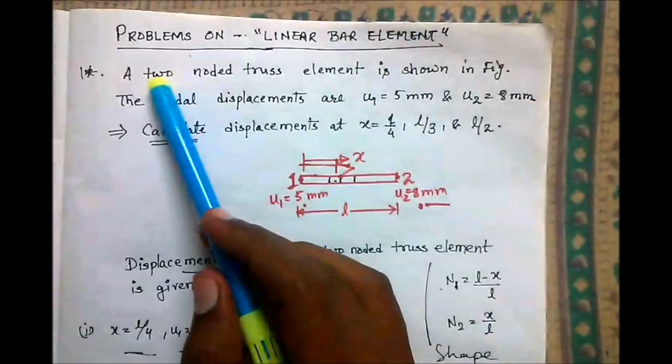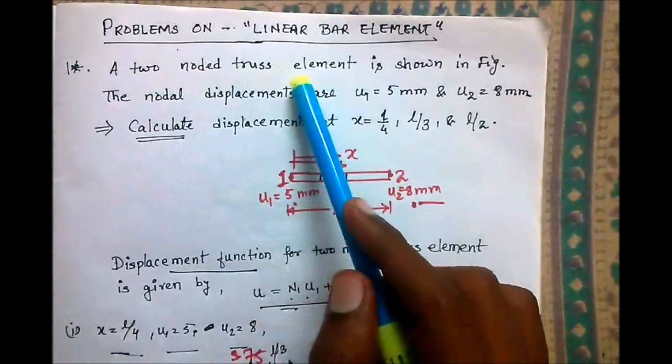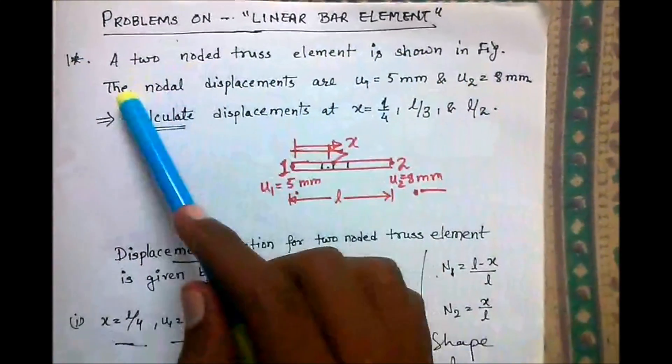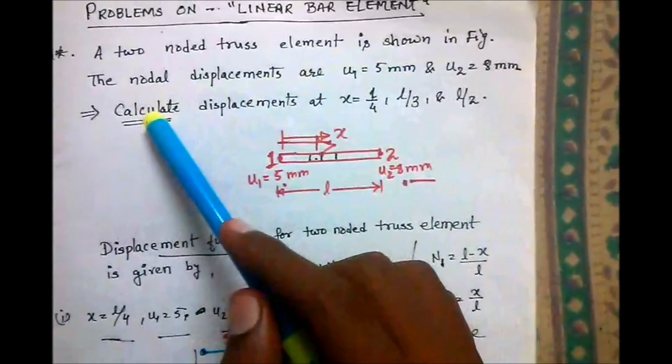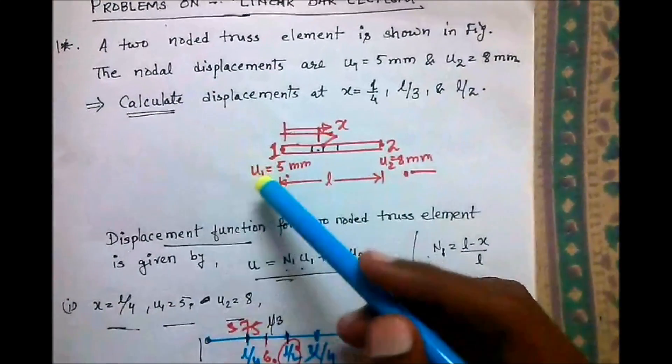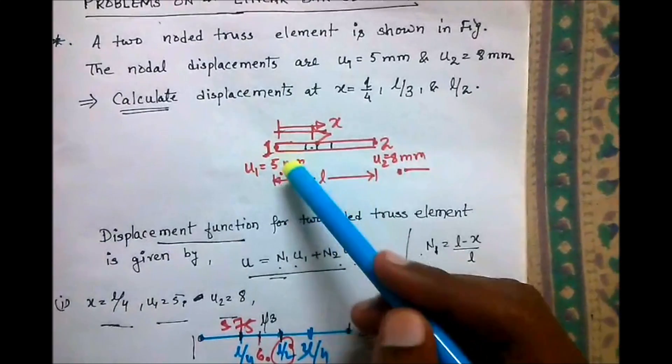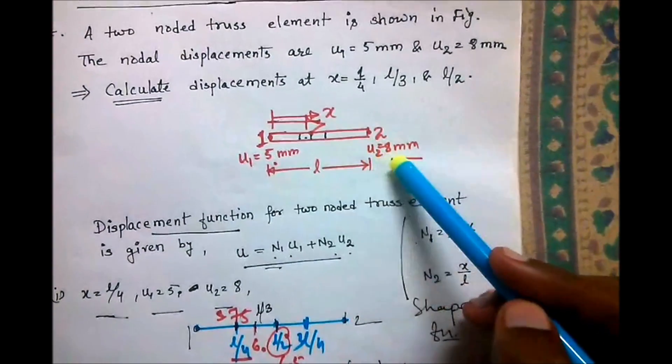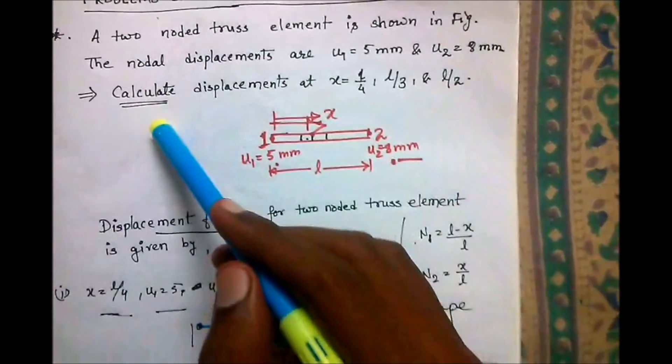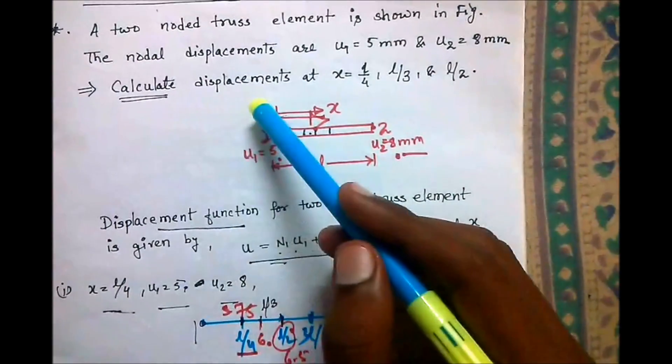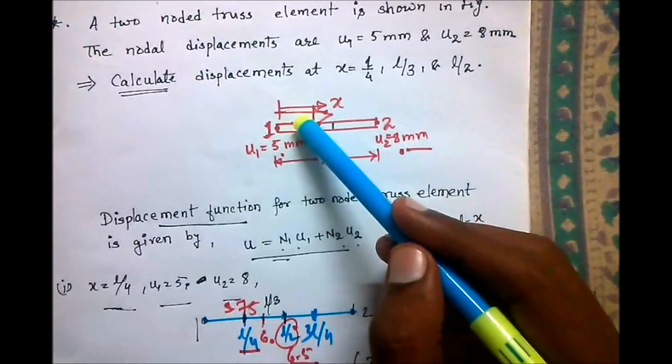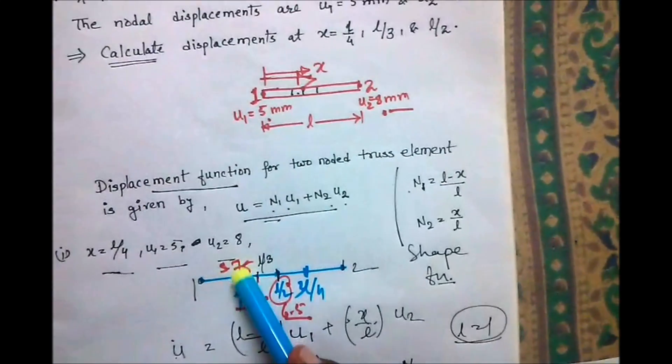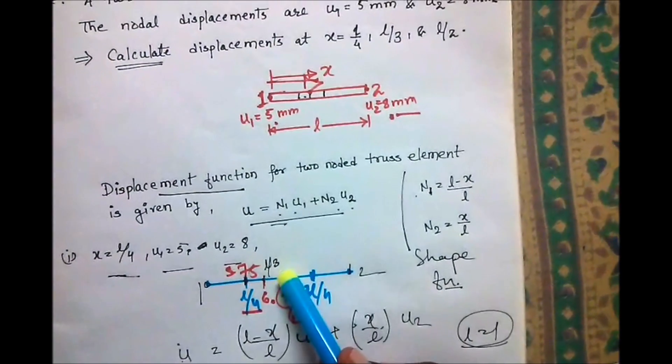The question given here is: a two-nodded truss element is shown in the figure. This has nodal displacement u₁ = 5mm at node 1 and u₂ = 8mm at node 2. You have to calculate displacement at x = l/4, x = l/3, and x = l/2.